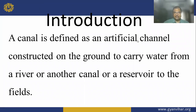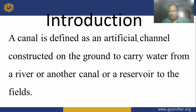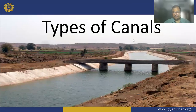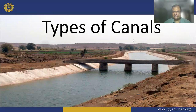A canal is defined as an artificial channel constructed on the ground to carry water from the river, another canal, or reservoir to the field. This is a simple definition. You can see from the picture — this is the canal and this is the canal bridge shown in the picture.